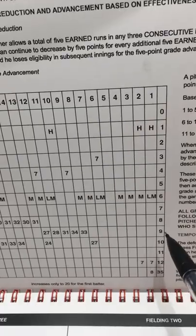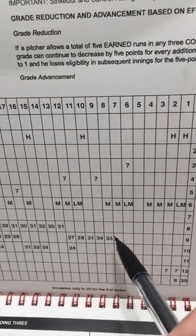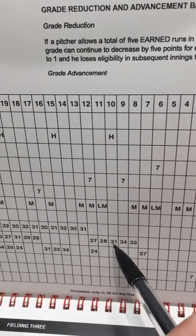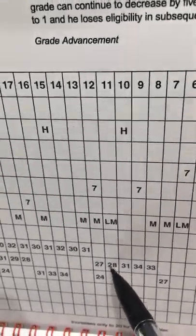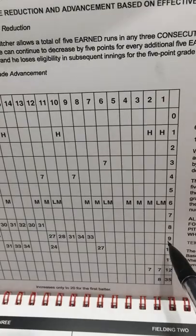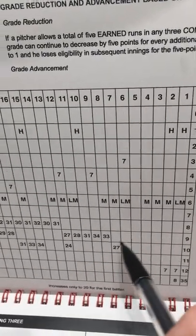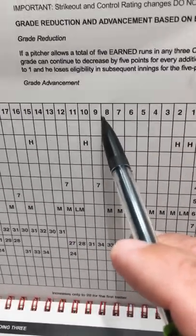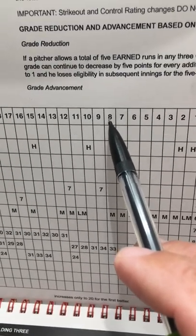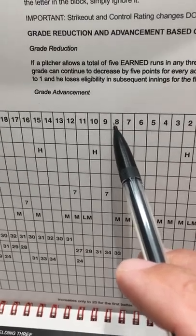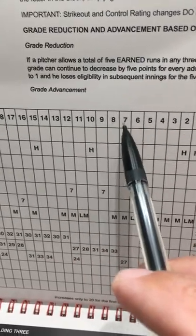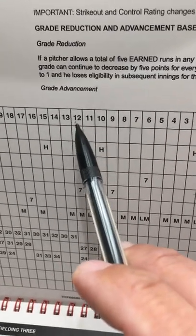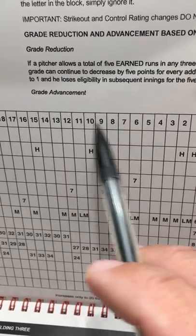If you look at play result 9 and you see a number here, this will be the out — so a pop out to second, pop out to short, fly to center, grounder to short, grounder to third. You can see play result 9 gets taken away by grade 8 through 12 pitchers. So when you're playing the master game and you look at your cards, if you see a pitcher with anywhere between grade 8 and 12, he's going to be like a C pitcher — most likely is a C pitcher if you look at his basic grade on his card.